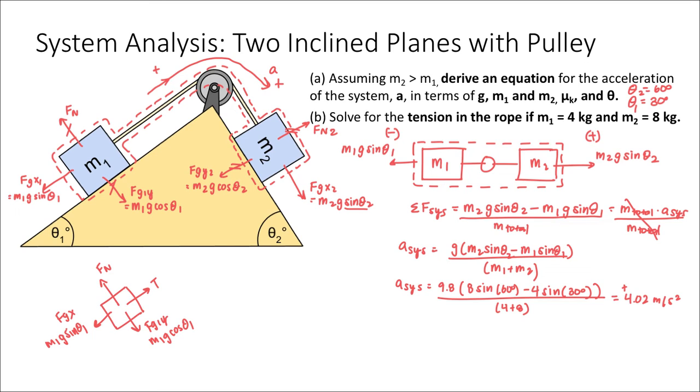So the sum of forces on block M1 in the parallel direction up along the hill would be the tensional force minus M1 g sine theta. And that's because we defined this direction as positive in our previous diagram. So please make sure you're consistent there. Which, in this case, would be equal to M A. But the A is the same. The acceleration of the system is the same acceleration as all of the objects in the system. They all move together. So that means that tension would be equal to M1 A plus M1 g sine theta.